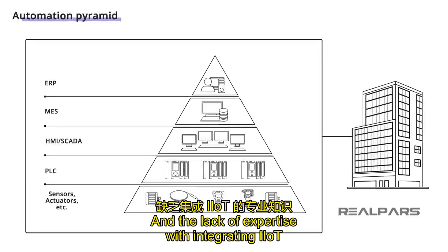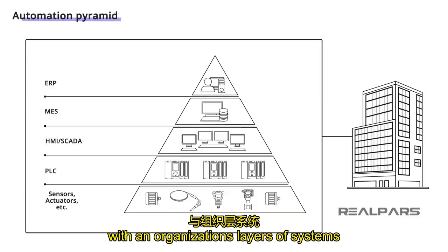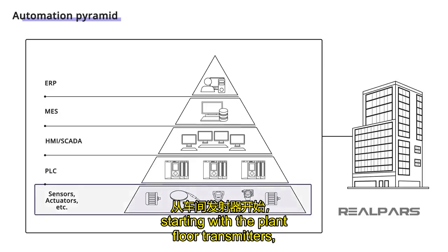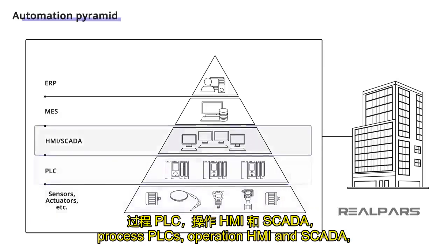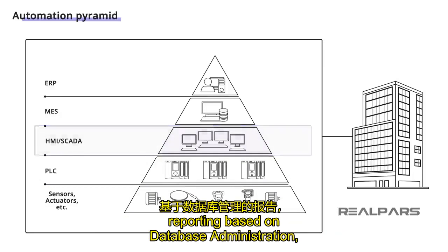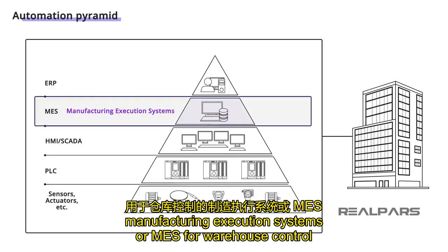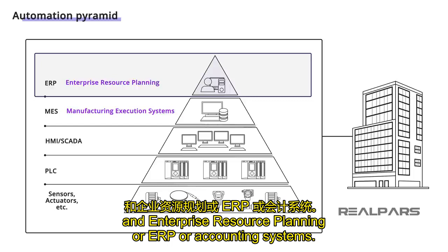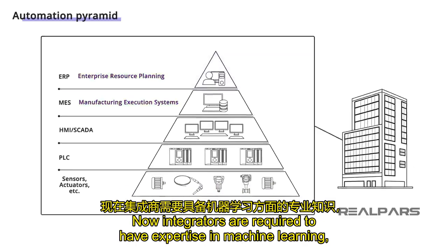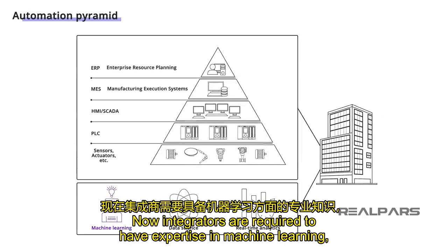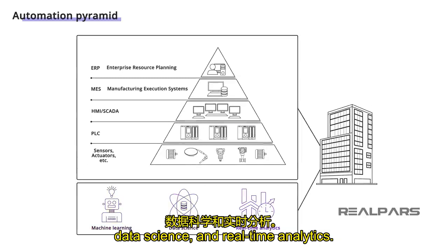The lack of expertise with integrating IIoT requires automation companies to be fully experienced with an organization's layers of systems, starting with the plant floor transmitters, process PLCs, operation HMI, and SCADA, reporting based on database administration, manufacturing execution systems, or MES, for warehouse control, and enterprise resource planning, or ERP, or accounting systems. Now, integrators are also required to have expertise in machine learning, data science, and real-time analytics.